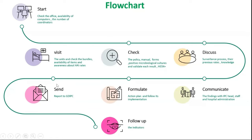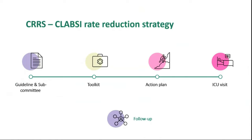Then formulate an action plan with follow-up by the hospital infection control and the surveillance coordinator in the regions. Then report to the GTI surveillance team in the GTI PC, and follow up on CLABSI indicators. The CLABSI rate reduction strategy starts from updating guidelines and subcommittee, then creating a toolkit by the GTI PC surveillance team, followed by monitoring visits and follow-up on CLABSI indicators.